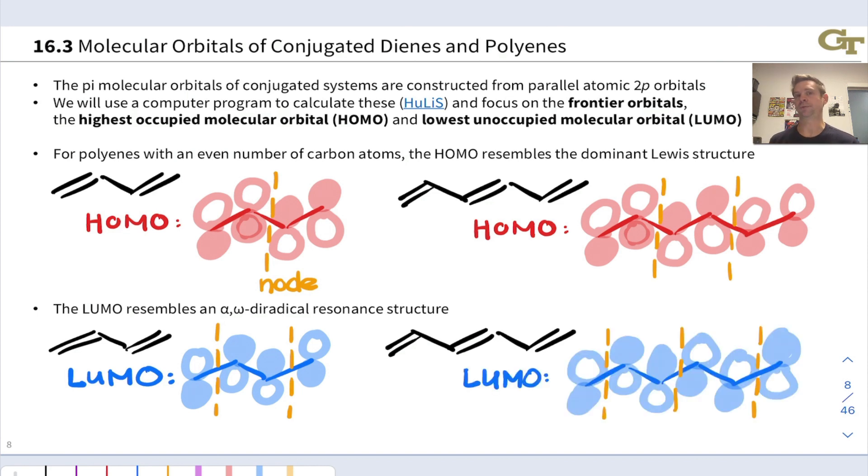A similar pattern holds in 1,3,5-hexatriene. We have these lone p orbitals on the terminal atoms, and we have constructive interference here, constructive overlap here, and nodes where we see the double bonds in the Lewis structure. One way to think about this is we just have a node where there's each double bond in the LUMO. That works for two carbons, four carbons, six carbons, any length of carbons.